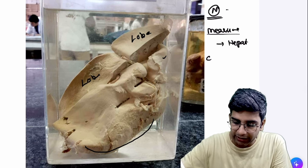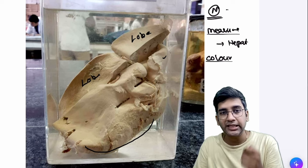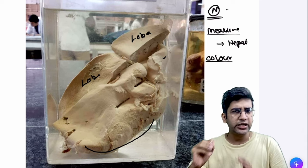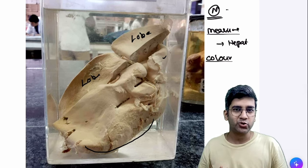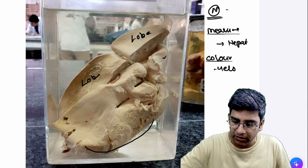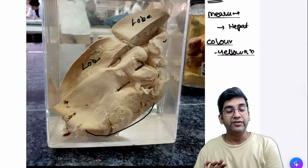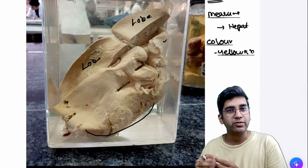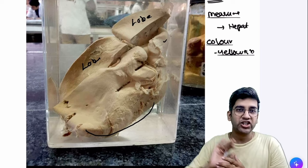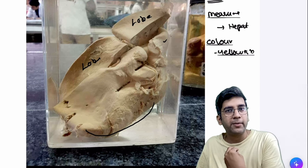Next, comment on color. In a jar-mounted specimen, unfortunately one important thing I cannot assess is consistency. The color of this liver is grossly a little bit yellowish — it's a yellow-colored liver. The normal color of the liver is brownish to greenish, and if fresh, reddish to brown due to vascularity. So this is a yellow-colored liver with gross hepatomegaly.